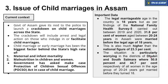Lekin agar baat ki jaaye kuch particular districts ki — Western Assam ke kuch districts jaise Dhubri ya South Salmara — here the problem is even more acute. As per NFHS report, 50% of the women were married before 18 years of age in Dhubri, and 44.7% women in South Salmara were married before they attained 18 years of age. The problem of child marriages is much higher in western Assam, and that is why the problem of maternal and infant mortality is also much higher there. There is a strong correlation between early marriages and high maternal and infant mortality.